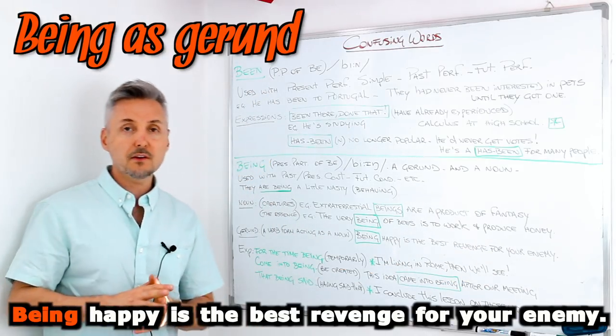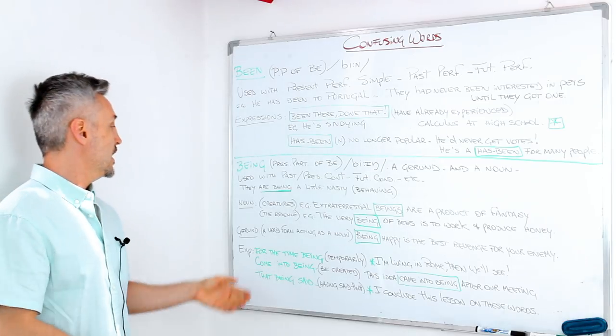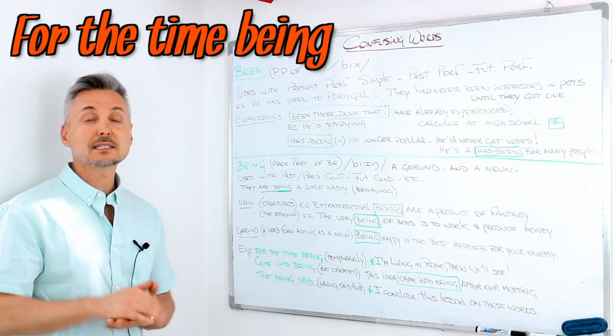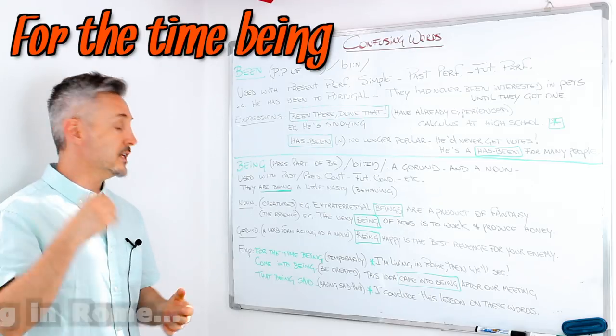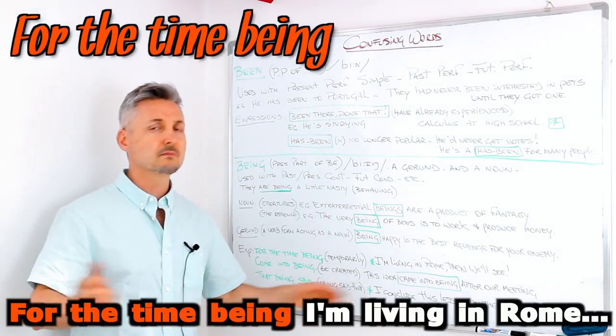Now, there are three expressions that I wanted to introduce here. For the time being, it means temporarily. For example, for the time being, I'm living in Rome. Then we'll see.